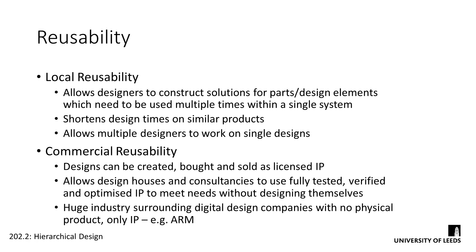Take ARM, for example. Over 40% of all mobile devices around the world run on an ARM processor, but ARM themselves have never produced a single physical chip. They license their architecture to physical device manufacturers, such as Qualcomm, Apple, and NXP, who bundle that processor core onto a device along with some other features and peripherals to create a full system on chip, which can either be implemented in their own technologies or sold on to someone else.